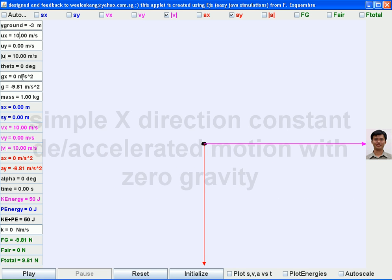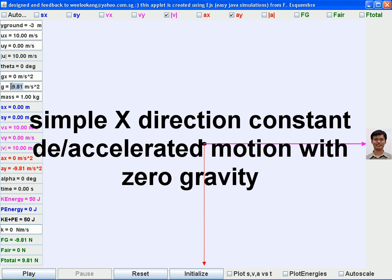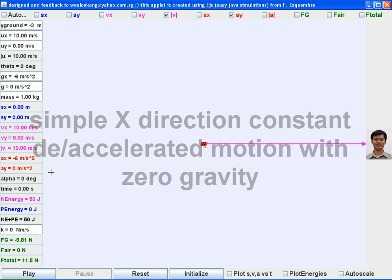We are going to set the initial speed to 10, change the gravity to 0, but instead also give the acceleration in x direction a value of negative 6 for example.